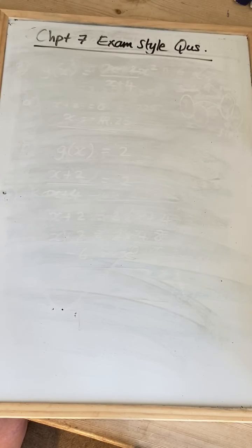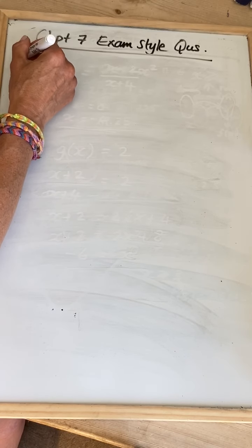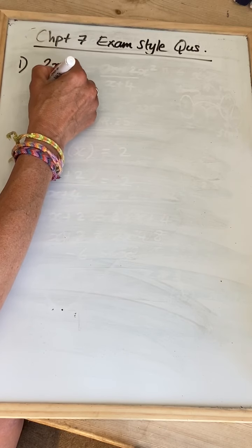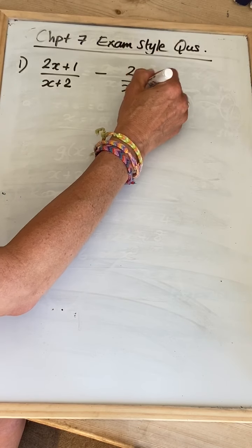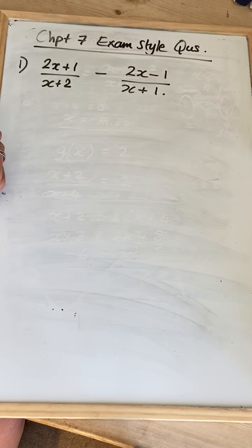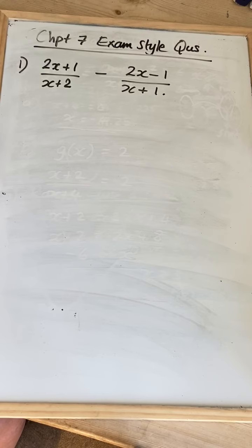So these are the Chapter 7 exam style questions — on page 97 — and we're just looking at the first three. The first one is a subtraction between two algebraic fractions: (2x+1) over (x+2), subtracting (2x-1) over (x+1). As soon as I see a subtraction, I think I've got to be careful with brackets, because otherwise the signs will all be wrong on my second half. And as soon as I see algebraic fractions added or subtracted, I think I've got to have a common denominator.